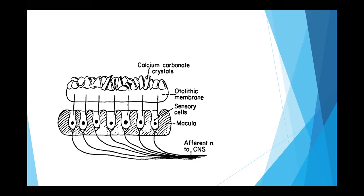The otolith membrane is a jelly-like, gelatinous substance. On top of it you have calcium carbonate crystals, which is the chemical composition. We have this to act as a mass — we need gravity to work on this. The semicircular canal is for angular motion.